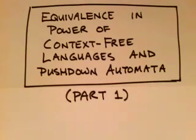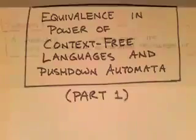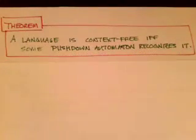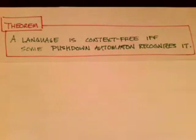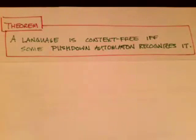In this video and the next, we're going to discuss the proof of that. The proof is a little bit complex, so I've broken it into two videos. A language is context-free if and only if some pushdown automaton recognizes it. In other words, the class of context-free languages is exactly the same class of languages as those accepted by a non-deterministic pushdown automaton.